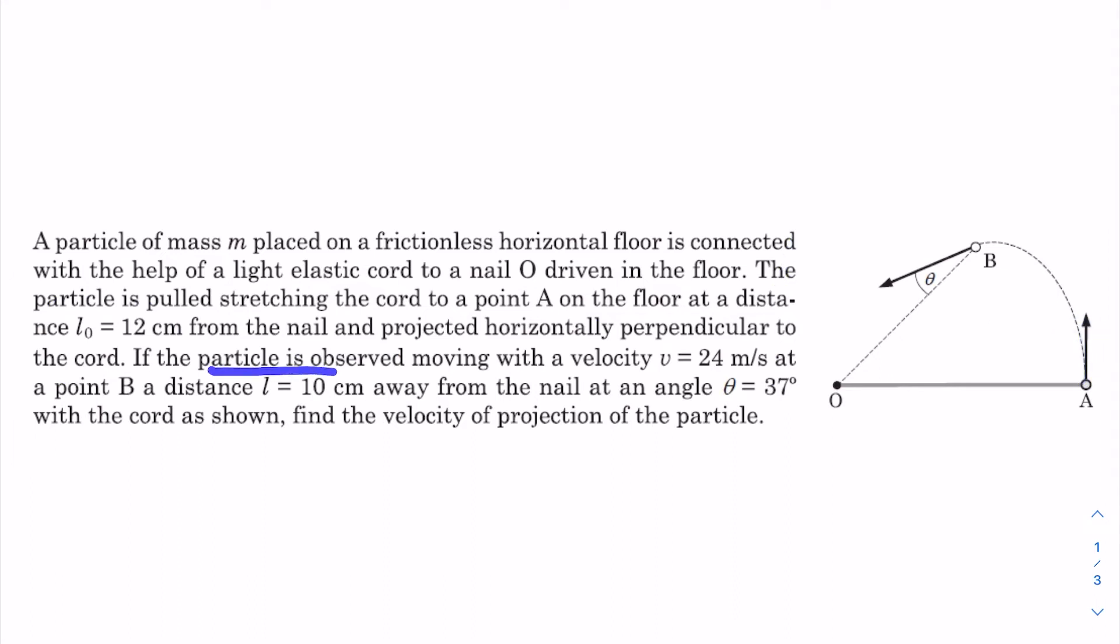If the particle is observed moving with a velocity V equals 24 meters per second at a point B at distance L equals 10 centimeter. Meaning first it was a little stretched. When it becomes a little stretched, it becomes 10 centimeter, then its velocity is 24 meters per second.